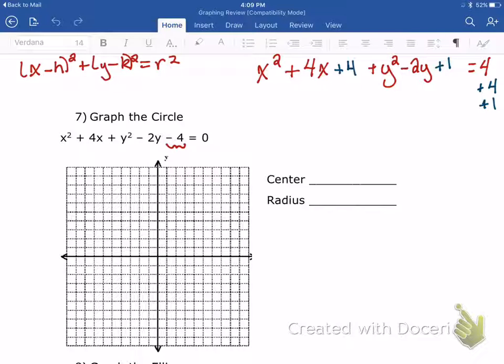So now I am going to factor these, and at that point I will be able to graph it. So x squared plus 4x plus 4, that factors to x plus 2 squared. Then y squared minus 2y plus 1, that factors to y minus 1 squared. Then 4 plus 4 plus 1 is 9. So now we have this in a format that we can graph our circle.